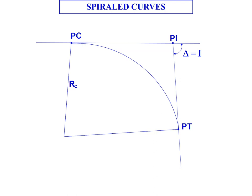So we go from a tangent which has an infinite radius to a curve which has a fixed radius and so theoretically there's a disruption in equilibrium at that point where you leave the tangent and enter the curve which is the PC and also with the PT.